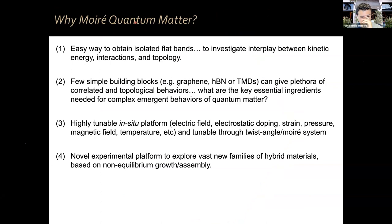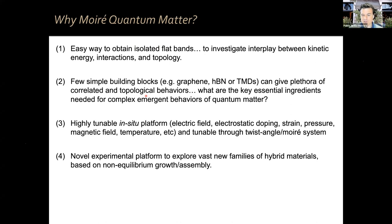Why Moiré quantum matter? It's an easy way to obtain isolated flat bands. In flat bands, you can investigate the interplay between kinetic energy and interactions, and for some of these lattices, topology. With relatively few simple building blocks — for example, graphene, hexagonal boron nitride, or transition metal dichalcogenides — you can get a plethora of correlated and topological behaviors. This brings us to the question of what are the key essential ingredients needed for complex emerging behaviors of quantum matter.